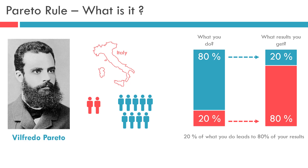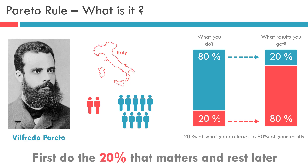Thus the 80-20 rule is also working here. You can also notice that maybe only 20% of all the dealers will help you to achieve 80% of your sales target value. Thus this Pareto principle applies to a lot of areas. In simple words, it says: first do the 20% that matters, and do the rest later.